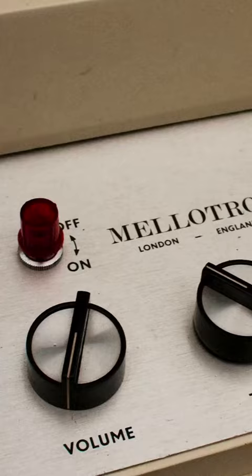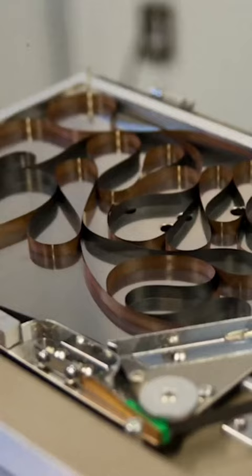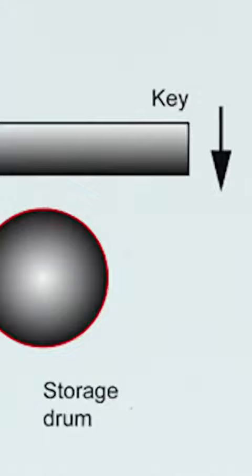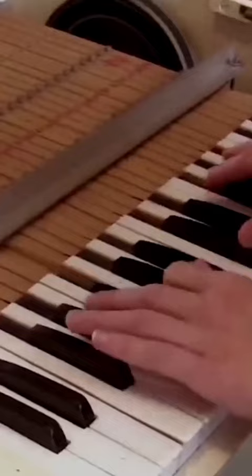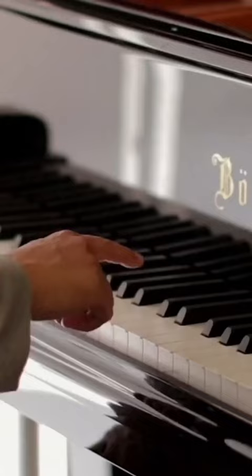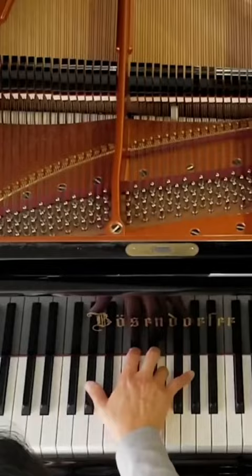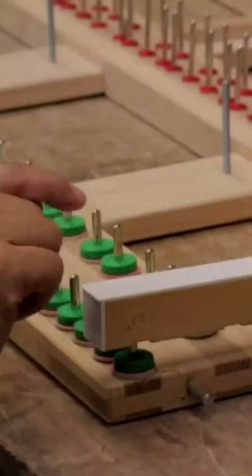The Mellotron stores its sounds on analog tape located inside the instrument. Whenever you press a key, a length of tape is pushed against a capstan, which pulls it across a playback head, generating the desired sound. This is analogous to when a piano player presses down a key, triggering felted hammers to strike the coinciding strings inside.